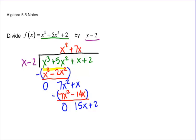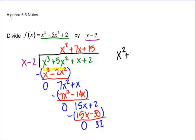What times x is 15x? 15. So 15 times x is 15x, and 15 times negative 2 is minus 30. We subtract the whole thing, and that gives us 0 and then 32. So the answer is x squared plus 7x plus 15, plus 32 over x minus 2. That's your whole solution. Just remember your long division algorithm — take what you get on top and multiply it with the divisor. Make sure your multiplication is solid.